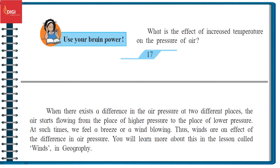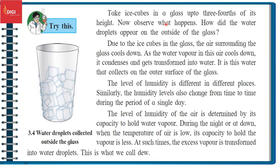Try this. Take an ice cube in a glass filled up to three-fourths of its height. Now observe what happens. How did the water droplets appear on the outside of the glass? Due to the ice cubes in the glass, the air surrounding the glass cools down. As the water vapor in this air cools down, it condenses and gets transformed into water.